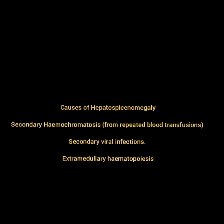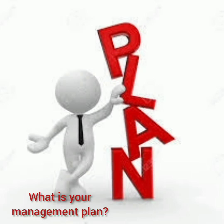The next question could be: what are the causes of hepatosplenomegaly in thalassemia major? The causes are: secondary hemochromatosis from repeated blood transfusions, secondary viral infections, and extramedullary hematopoiesis. The next question could be: what is your plan of management?